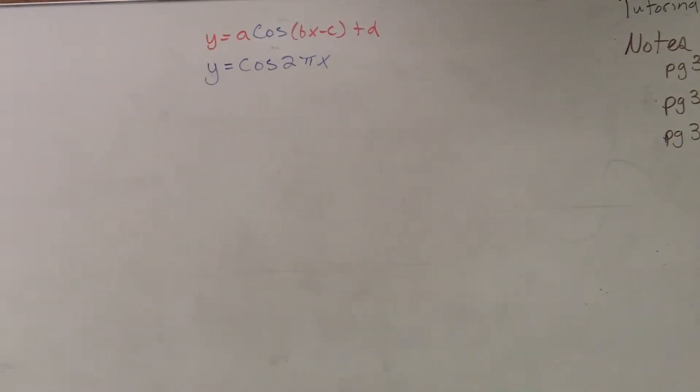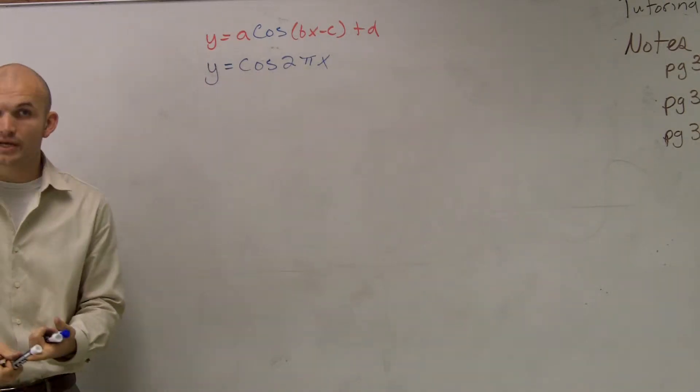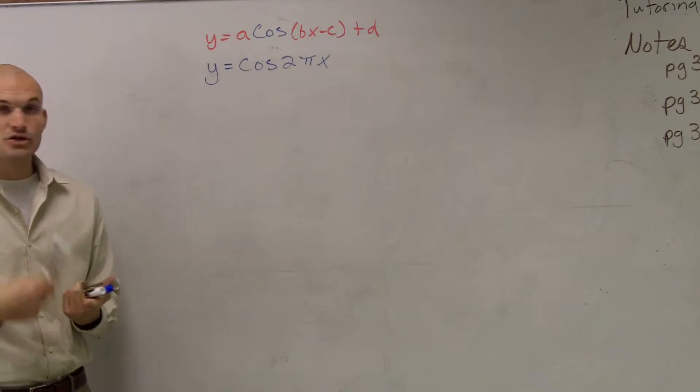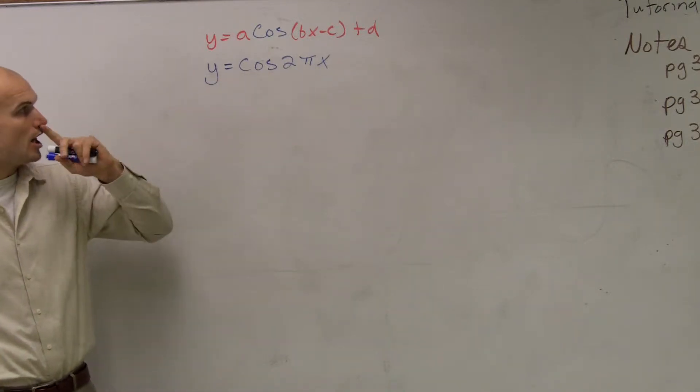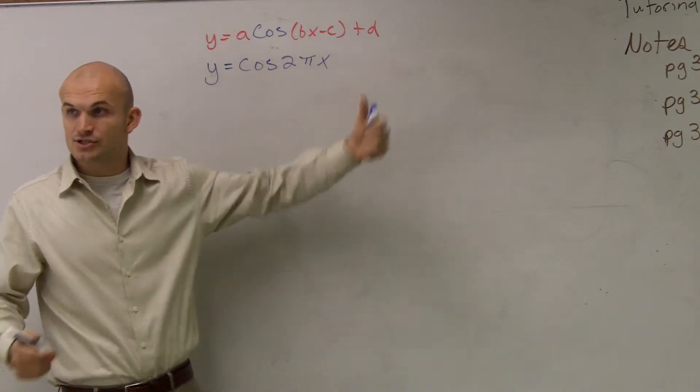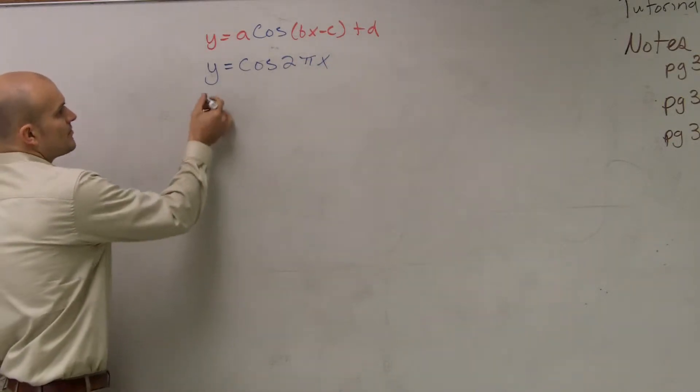Okay, so when doing a problem like this, again guys, we just need to find the period, the amplitude, and then determine if there's a reflection, which there's not. There's no horizontal translation, so we're good, and there's no vertical translation, so we're good. So let's just find the period and the amplitude.